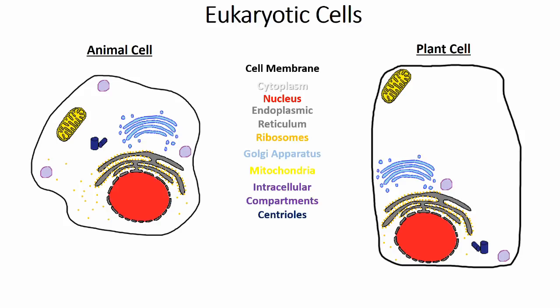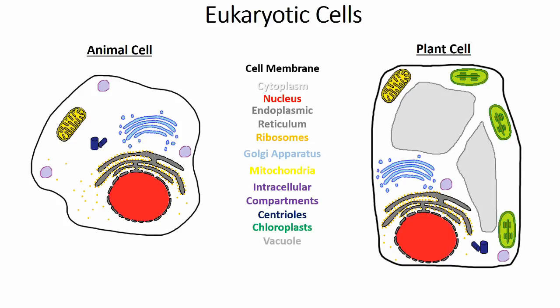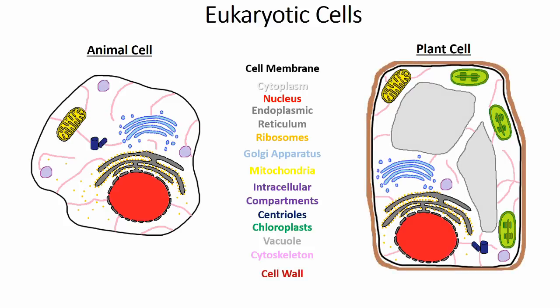Plant cells have extra organelles that animal cells do not possess, including chloroplasts, where photosynthesis occurs, and the vacuole, which is a large storage compartment that is important for the cell's structure and maintenance. In both cell types, all of these structures are held in place by the cytoskeleton, which is also used for transport, dividing and maintaining the cell's shape. Plants also have a cell wall surrounding the membrane for extra protection and structural support.